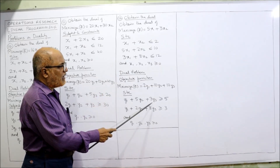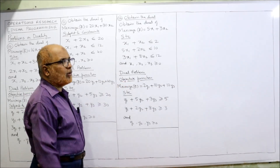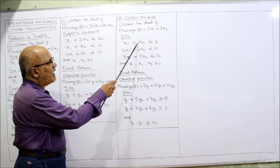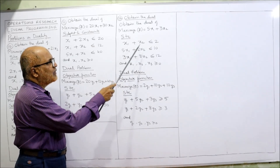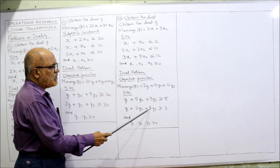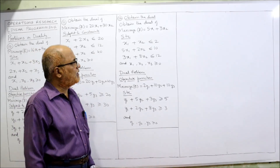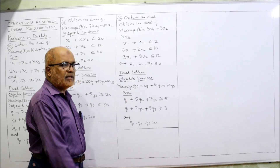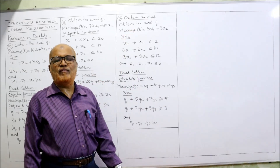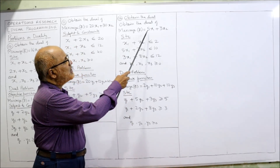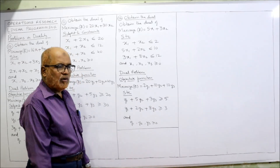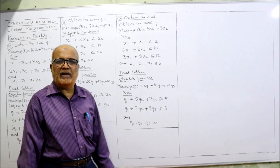Since the primal inequalities are ≤, the dual becomes ≥: Y1 + 5Y2 + 3Y3 ≥ 5. For X2: vertical coefficients are 1, 2, 8 — horizontally: Y1 + 2Y2 + 8Y3 ≥ 3. The restrictions are the primal objective coefficients 5 and 3. All variables Y1, Y2, Y3 ≥ 0.